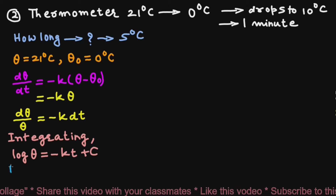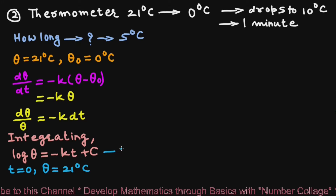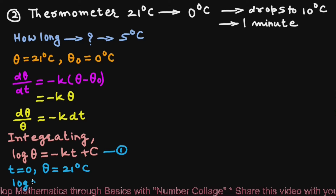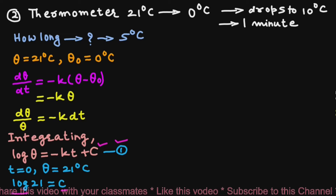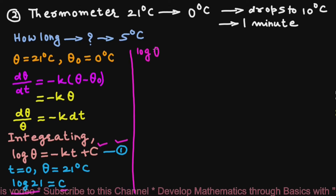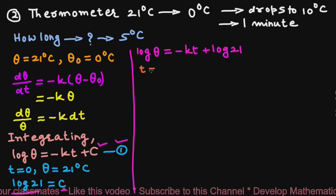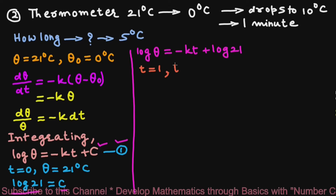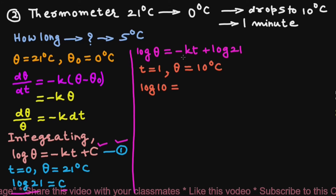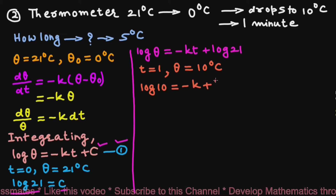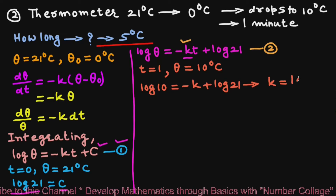When t = 0, θ = 21°C. So log 21 = c. The equation becomes log θ = −kt + log 21. After one minute, when t = 1, the temperature drops to 10°C. Therefore, log 10 = −k + log 21, which gives k = log(21/10) = log 2.1.